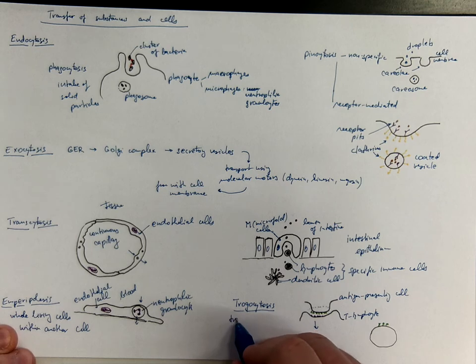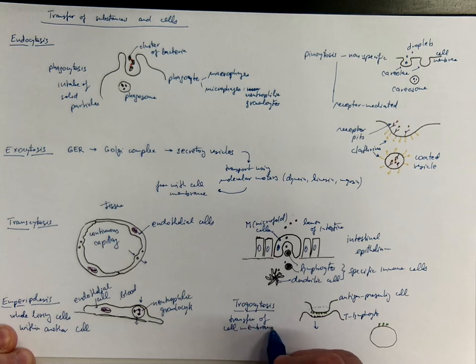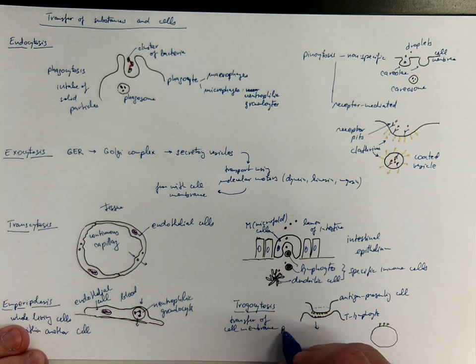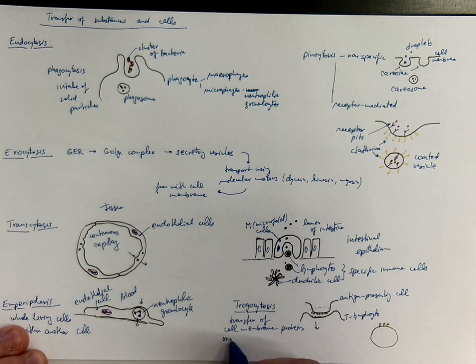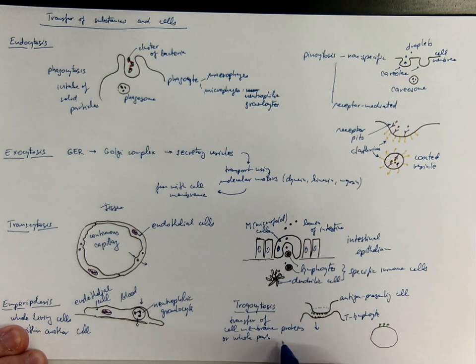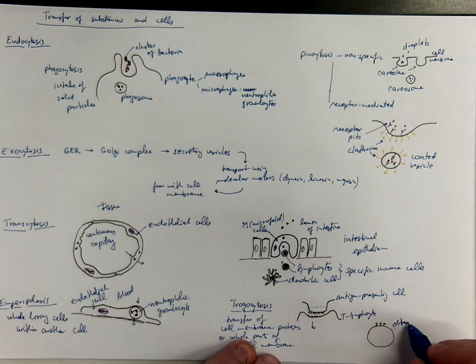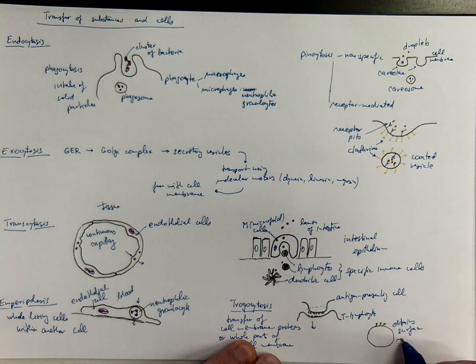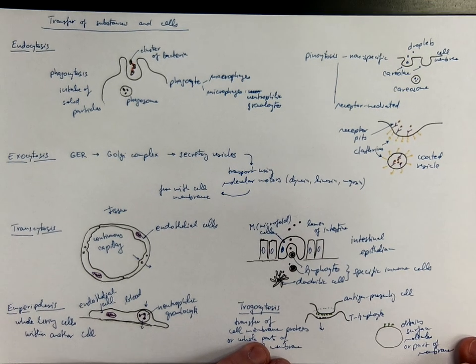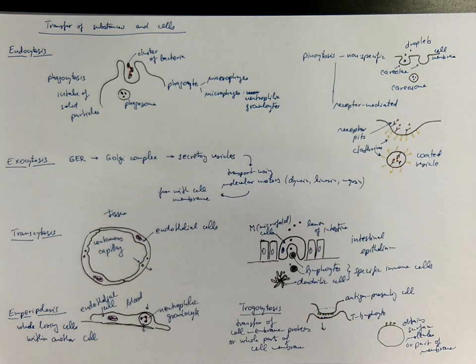So it's transfer of cell membrane proteins or whole parts of cell membrane. Thus, the target cell obtains surface molecules taken from the other cell, surface molecules or part of the membrane. So there's a whole variety of transfer mechanisms in histology.